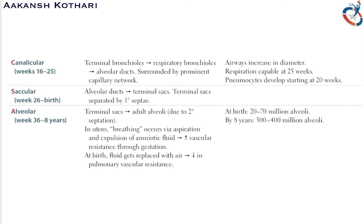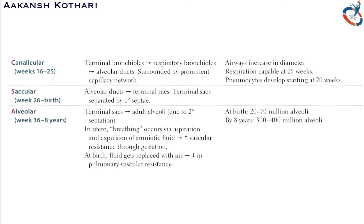The saccular phase spans from week 26 to birth. Alveolar ducts are converted into terminal sacs, which are separated by primary septation. The alveolar phase runs from week 36 to eight years of age — terminal sacs are converted into adult alveoli via secondary septation. Primary septation forms terminal sacs; secondary septation forms adult alveoli.